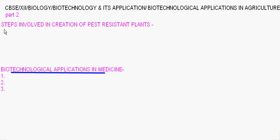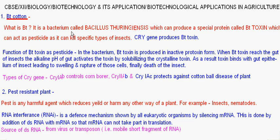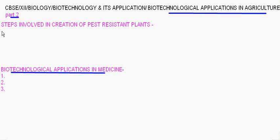This is a continuation of biotechnological applications in agriculture, part 2. In this, I'll discuss the steps involved in creation of pest-resistant plants. Previously I explained what a pest is and what RNA interference is. Now I'll discuss how RNA interference is used in creation of pest-resistant plants.